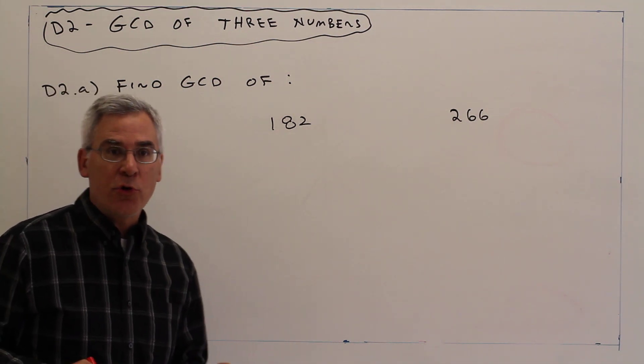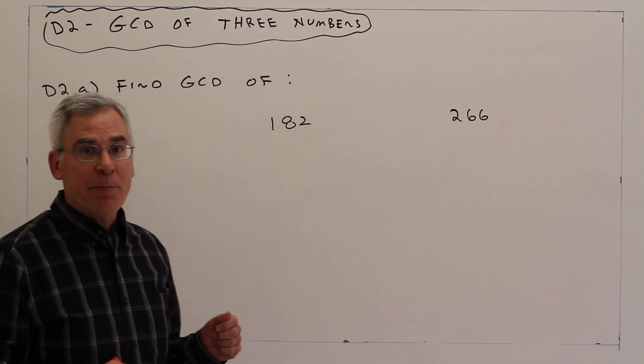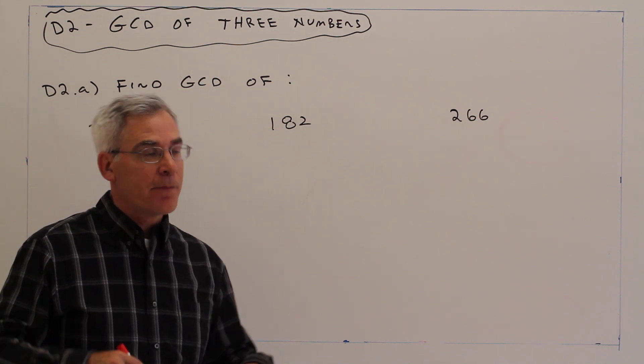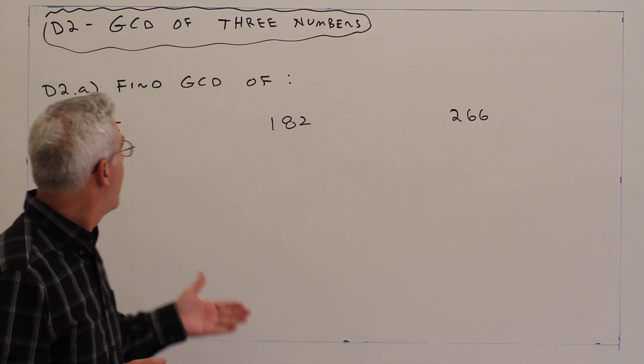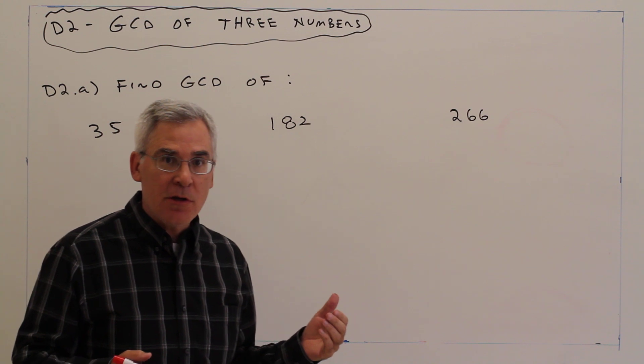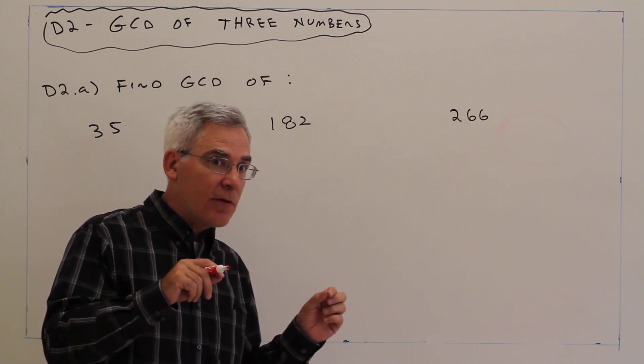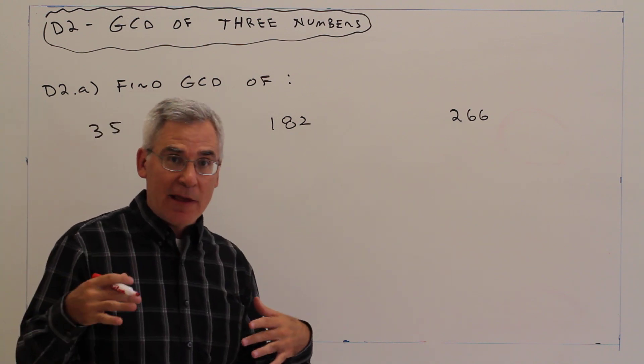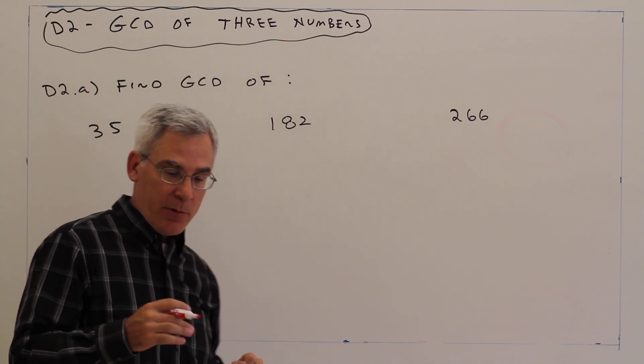Welcome to video D2, finding the greatest common divisor of three numbers. Same process as before. We'll find the prime factorization, and greatest means least, and I'll just do it for all three numbers.